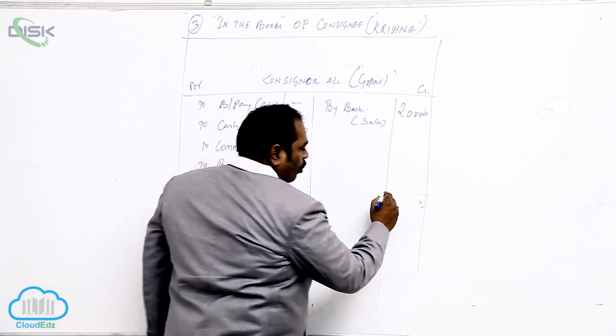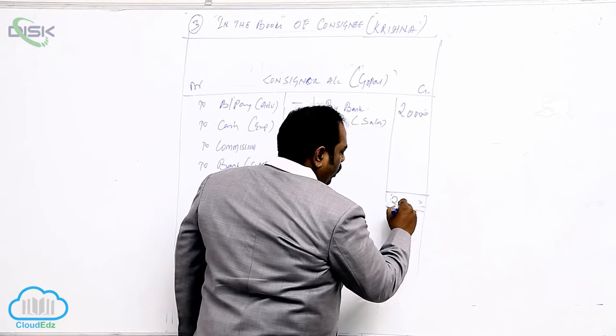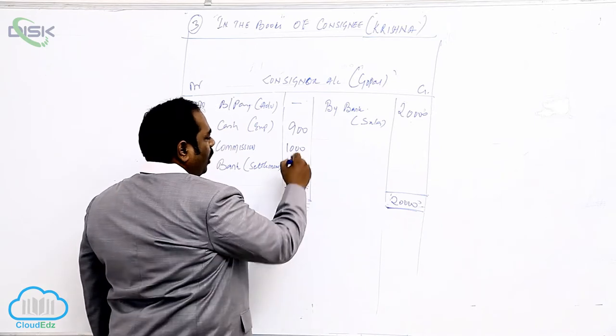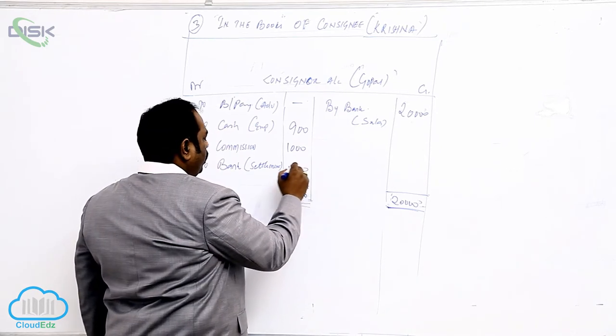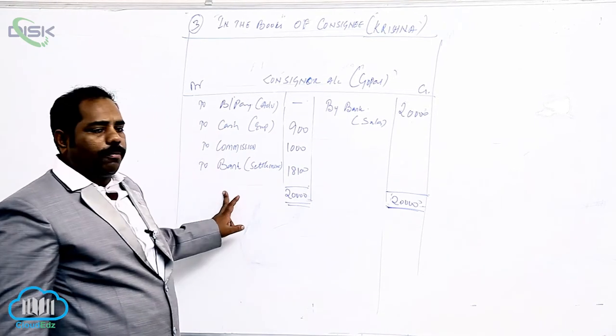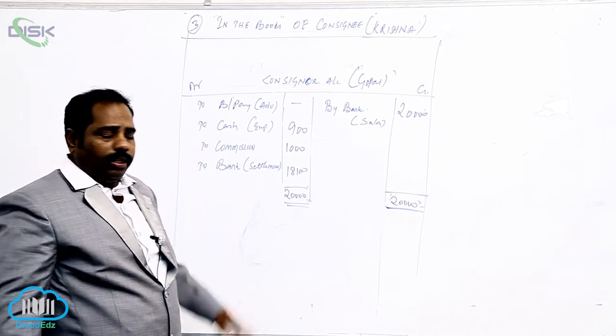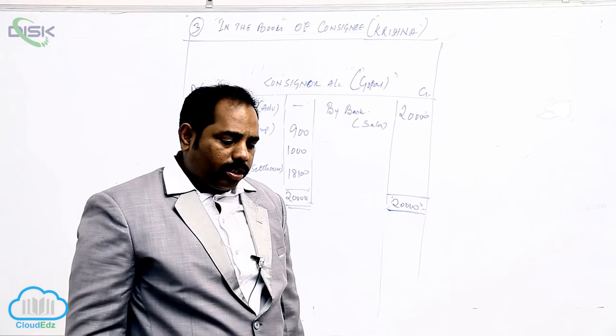Now when you close the account: 20,000 minus 1,900 equals 18,100. To bank - this is the settlement amount which consignee has to pay to consigner. This is the third one. Next we will start the fourth one now.